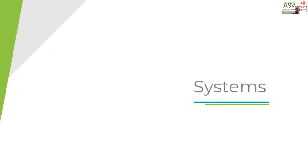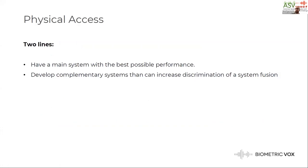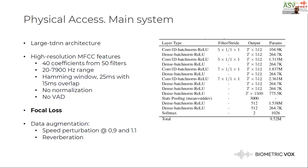Now onto the systems. Our approach for the physical access task is two-fold. On the one hand, we try to have a main system with the best possible performance. On the other hand, we try to develop complementary systems that will increase the discriminative power of a system fusion. Our main system uses a TDNN neural network architecture that is well known in the speaker recognition field. It has a first set of layers that operate at the frame level, then a pooling layer that aggregates over time and computes statistics, and then a final set of layers that operate at the utterance level.